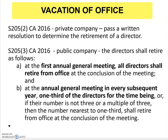Section 205, subsection 2 says for a private company, normally they pass a written resolution to determine the retirement of a director. For a public company, under section 205, subsection 3, the director shall retire as follows.